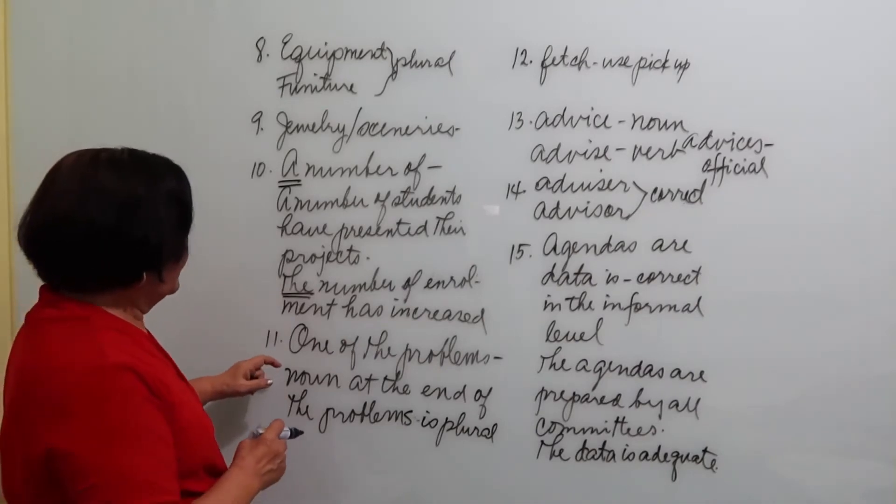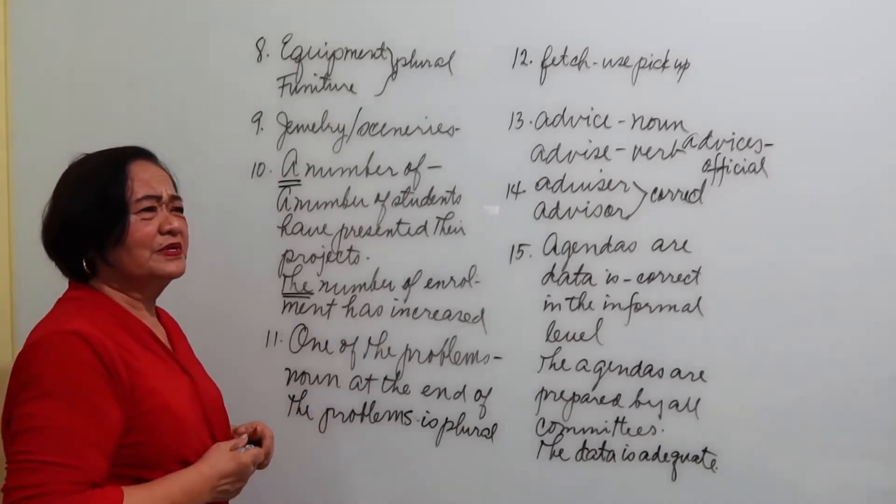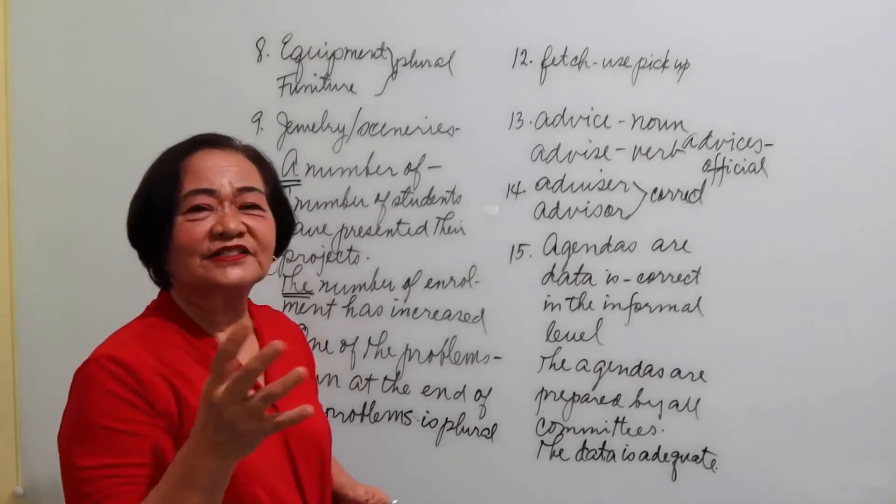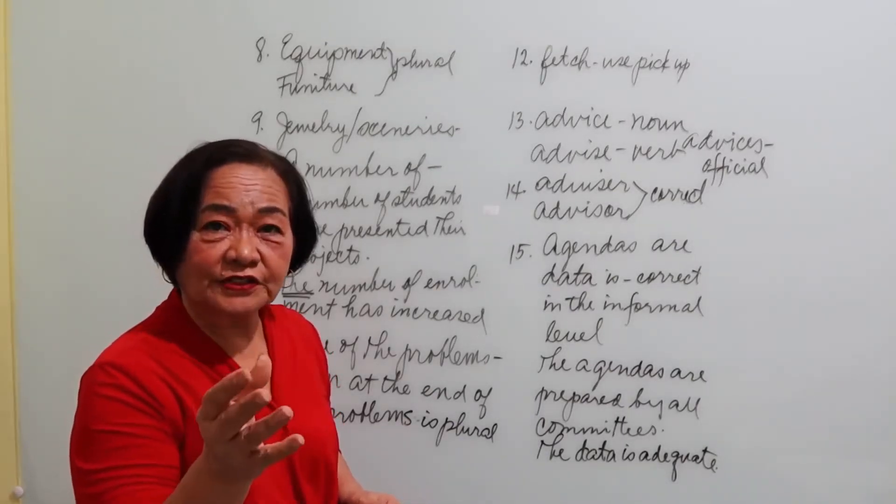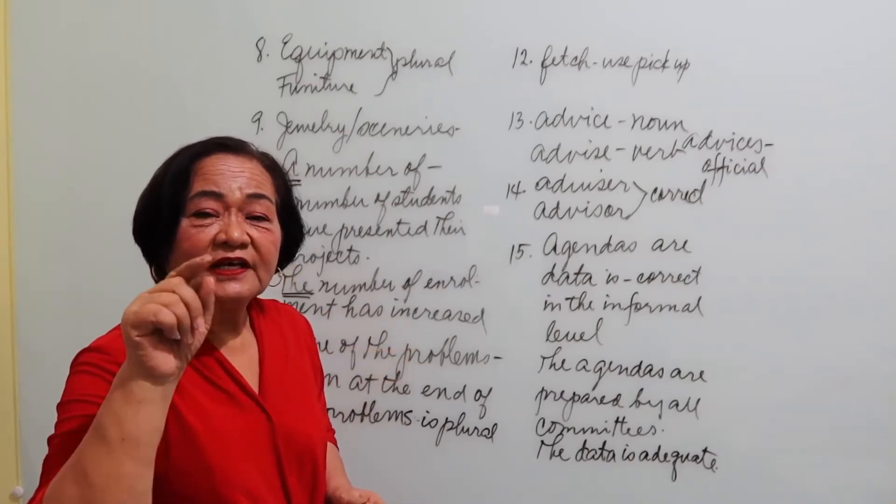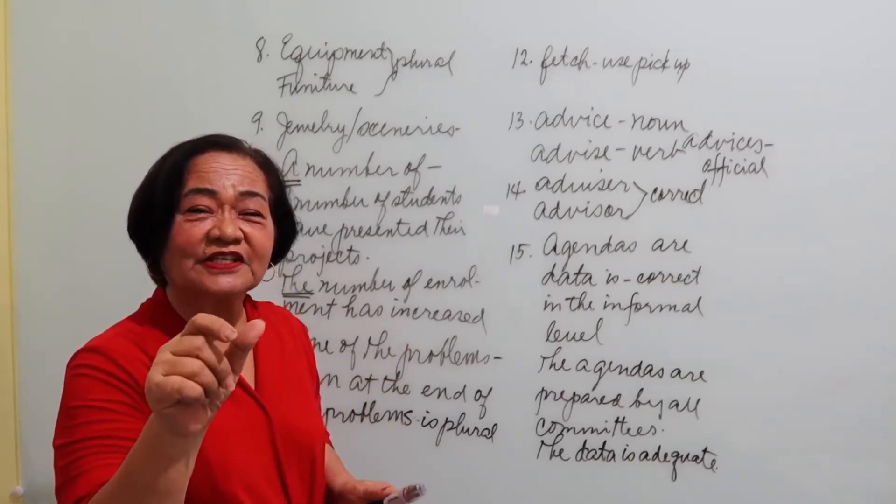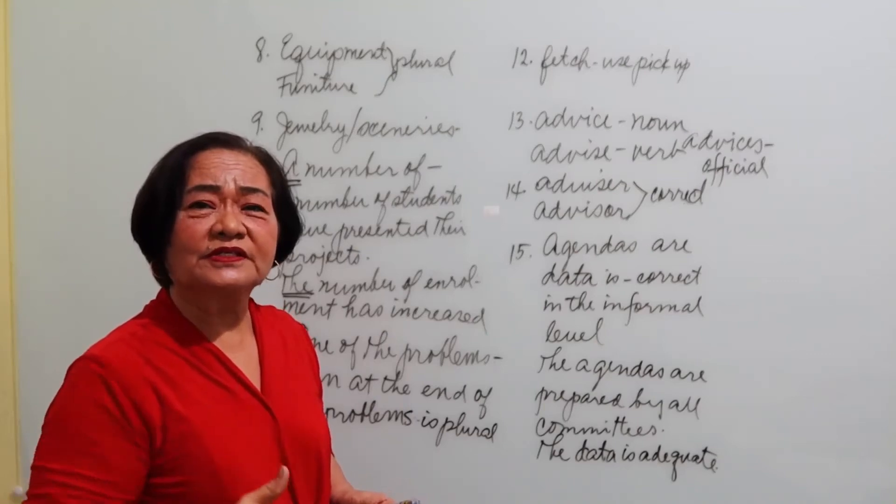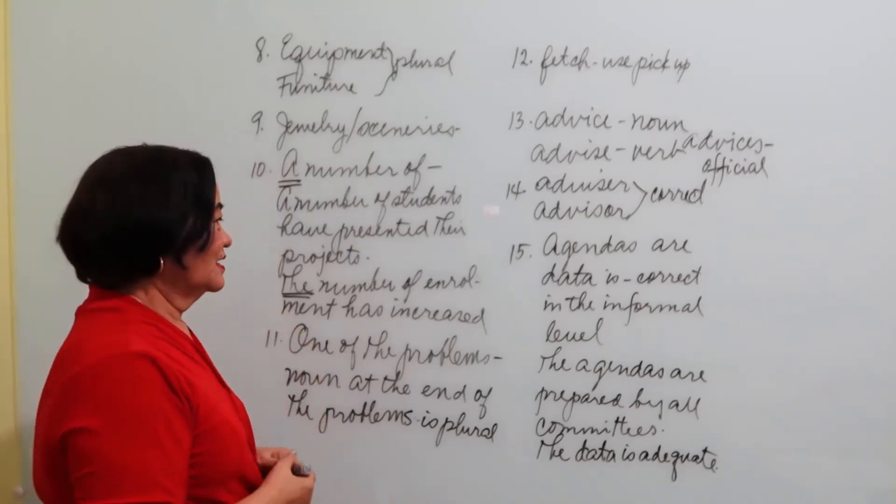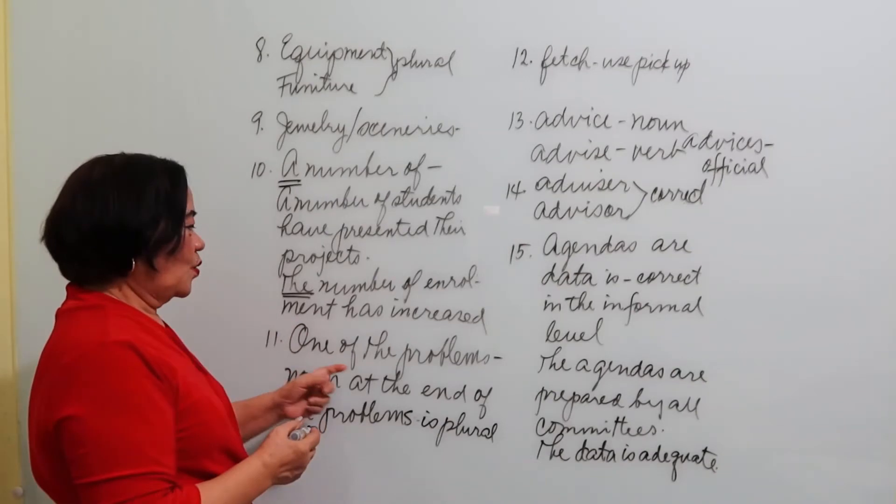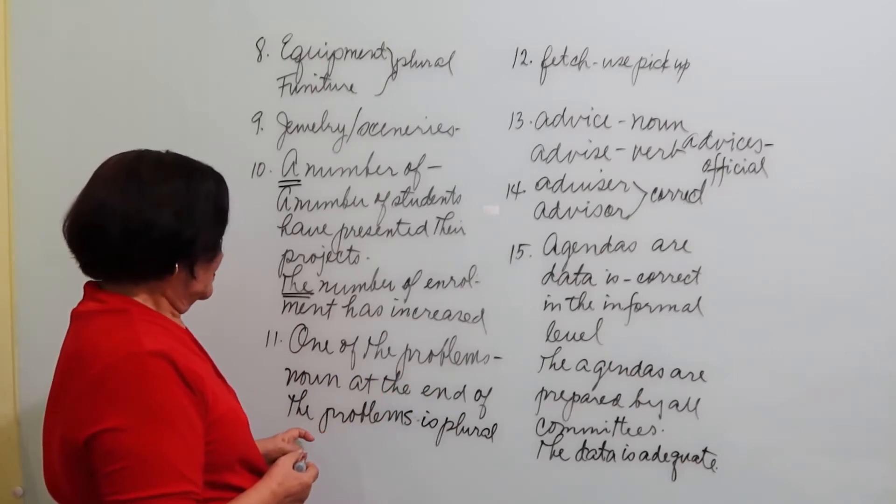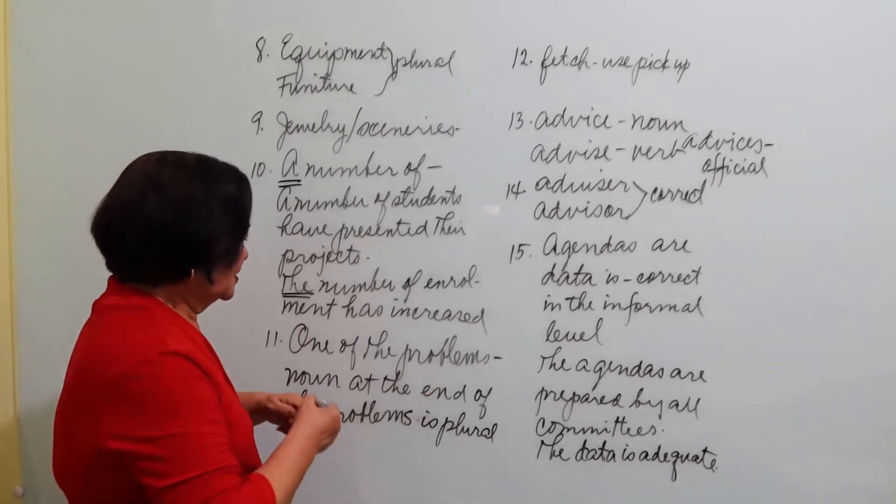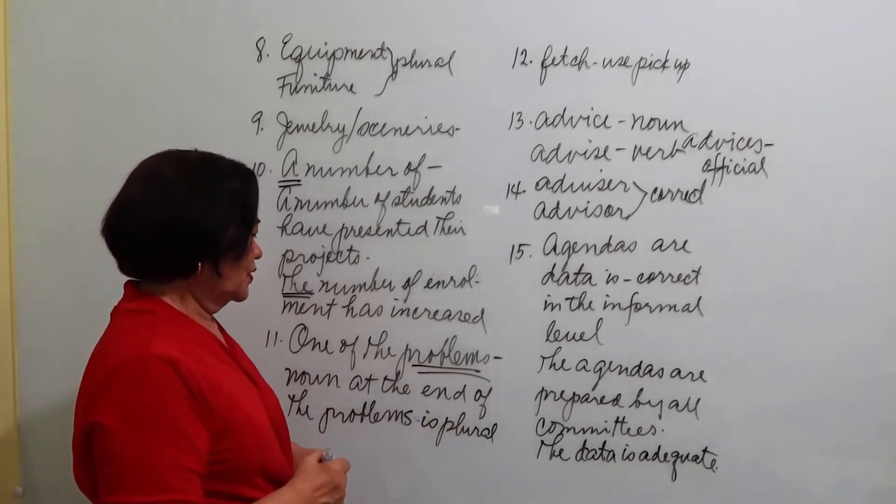Then we have the expression. Very often you hear people say, one of the doctor. It should be one of the doctors. With this expression, the noun at the end should always, always and forever be with an S. So, one of the problems. Noun at the end of the problems is plural.